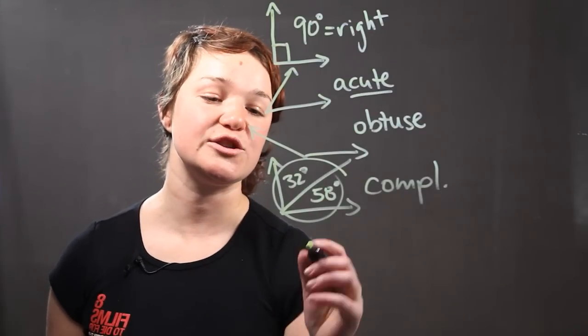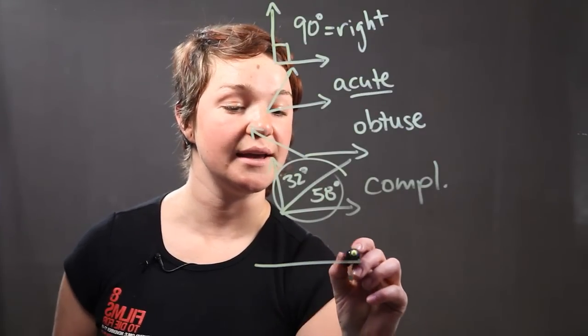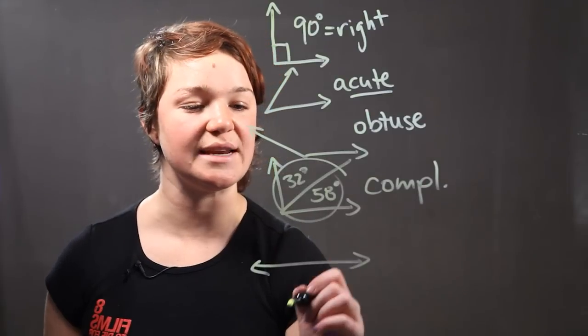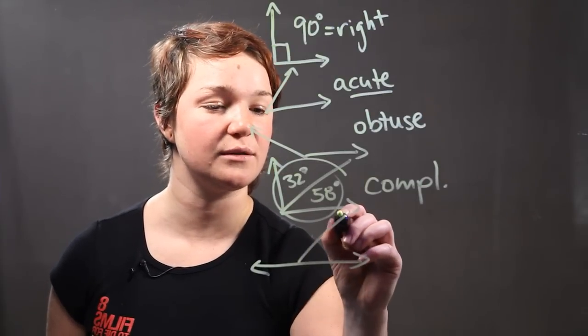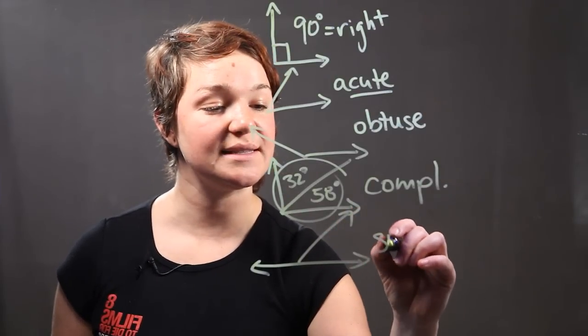And if you have a situation where you have a line, which is 180 degrees, that's made up of two angles, this is called a supplementary angle.